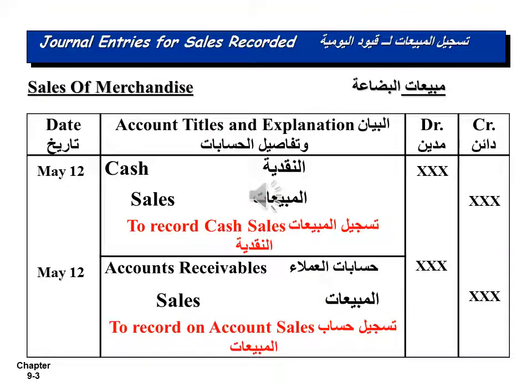Recording Sales of Merchandise. Number 1: the journal entry needed to record cash sales. Cash, debit; Sales, credit. Description: to record cash sales.